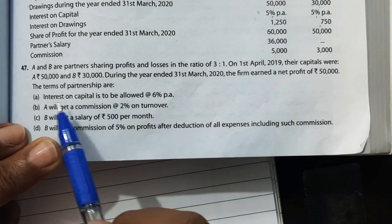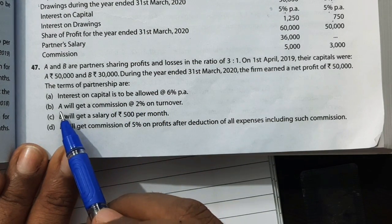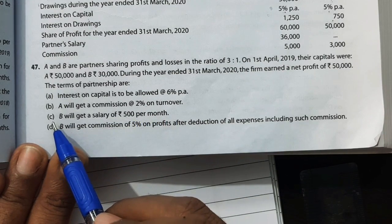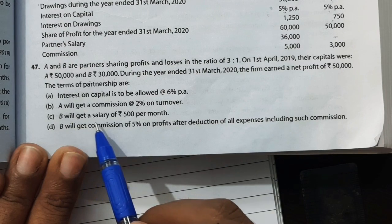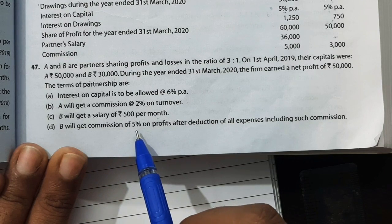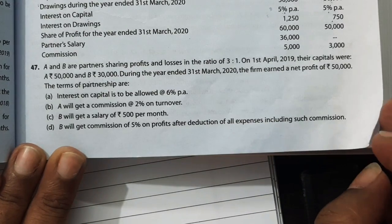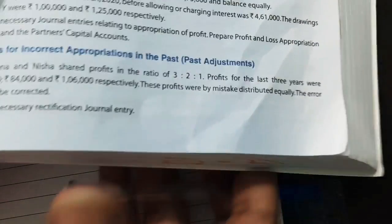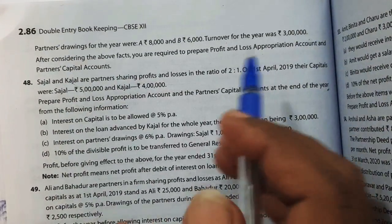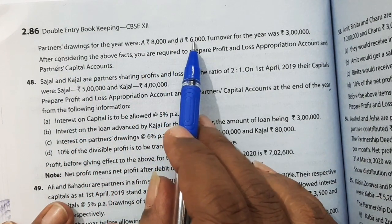The terms of partnership are: A) Interest on capital is to be allowed at 6% per annum. B) A will get a commission of 2% on turnover. C) B will get a salary of Rs. 500 per month. D) B will get a commission of 5% on profit after deduction of all expenses including such commission. Partners drawings for the year were Rs. 8,000 for A and Rs. 6,000 for B.